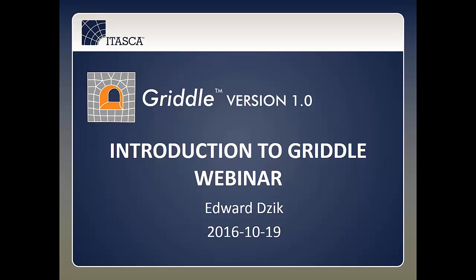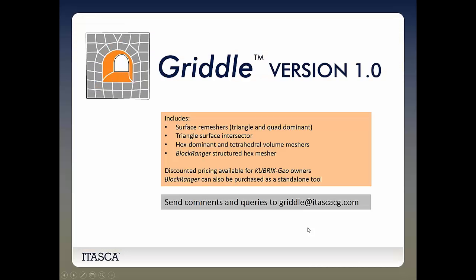The purpose of this webinar is to introduce you to the newest member of the Atascadero software family — a CAD-based meshing product called Griddle. Griddle is used to generate 3D meshes for numerical analysis programs such as FLAC3D, 3DEC, and many others. Griddle is extremely powerful but very easy to use — meshing complex geometry that used to take hours or days now progresses very quickly and with good results. Griddle consists of three components that plug into the Rhino CAD system from Robert McNeel and Associates.